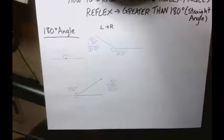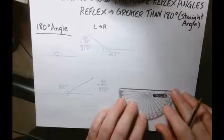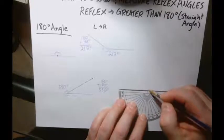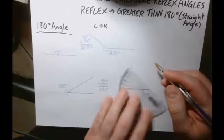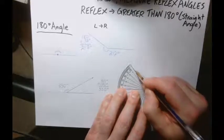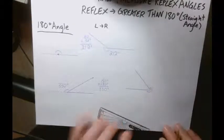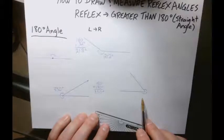So now we're going to do one where we can measure it again, but we're going the opposite direction. So I'm just drawing this in. So we're going to go like that. So how do we measure this reflex angle? So this is the opposite direction now.